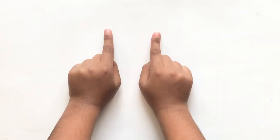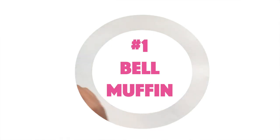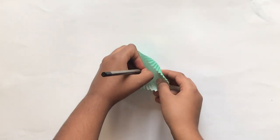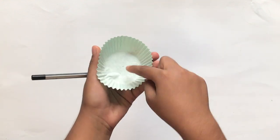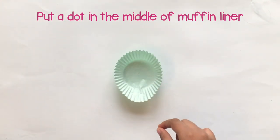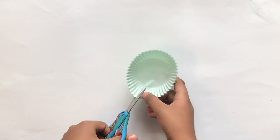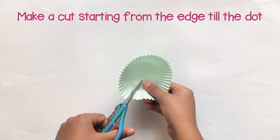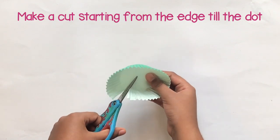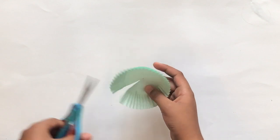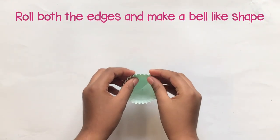First one is Bell Muffin. You take a muffin liner and your pencil. Put a dot in the middle like this. Now, grab your scissors and cut it from a side like this. Take both edges and roll them like this.